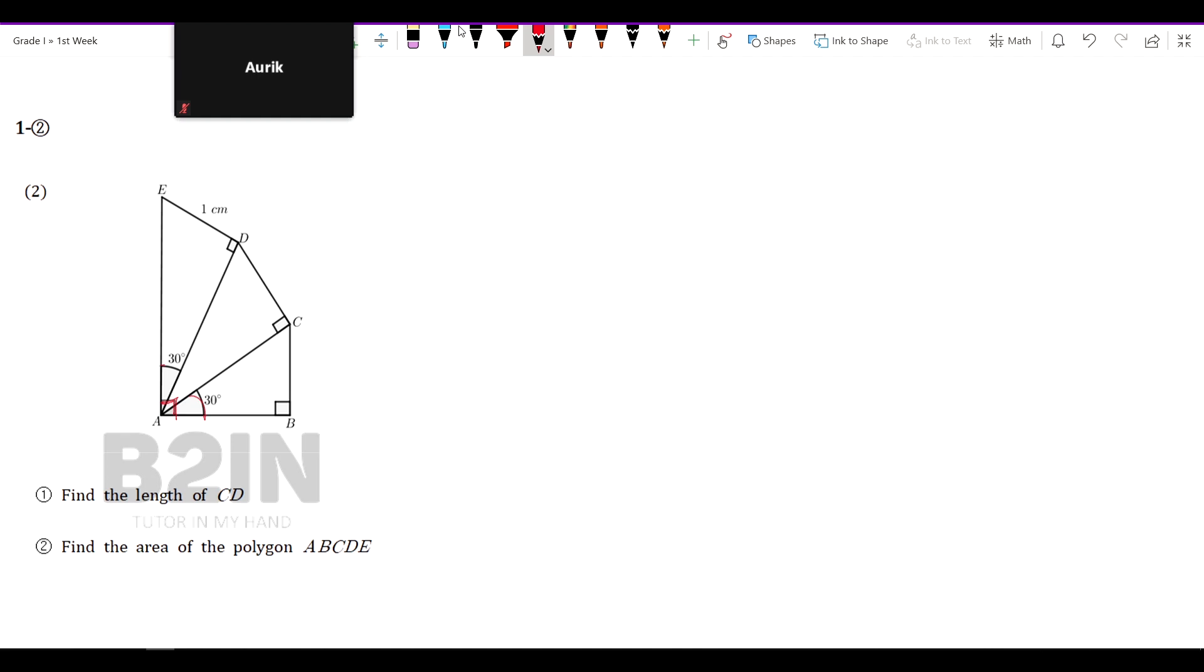And this angle is 30, this angle is 30. This angle is 30, right? And then we protect our right angle triangle. So the right angle triangle is easy.